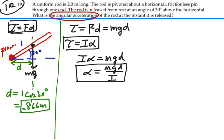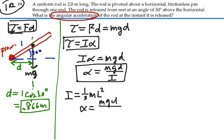What is the moment of inertia of a rod about its end? We calculated that earlier — the moment of inertia of a rod about its end is one-third mL². Plugging that in for I, our angular acceleration will be mgD over one-third mL².